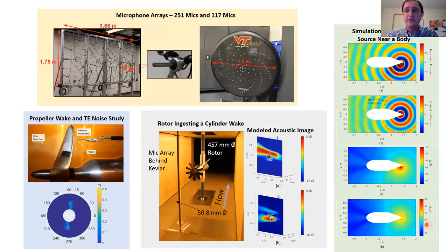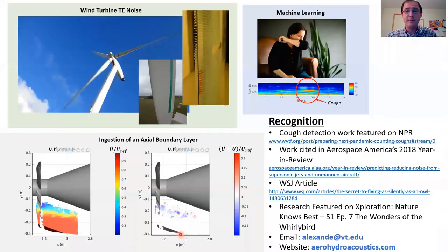We do a small amount of simulation in my group, mostly analytical, but some computational, which is shown here. These are some simulations showing the acoustic scattering and shielding of an acoustic source by a nearby body. This was used to understand the noise radiation by a propeller.